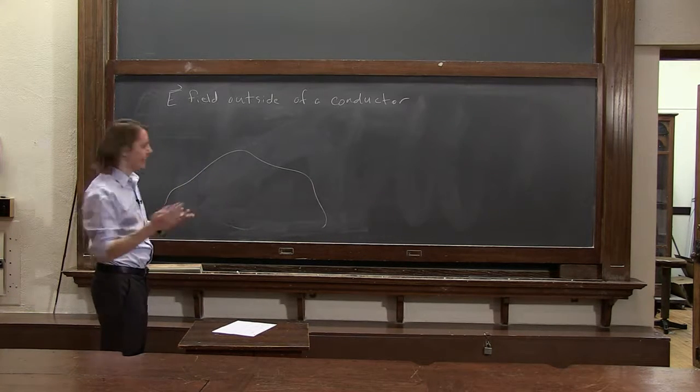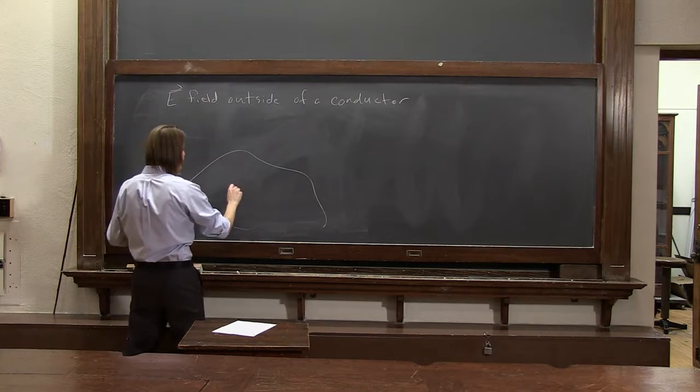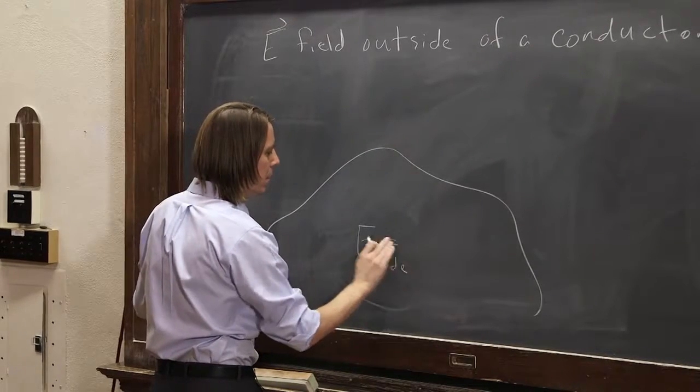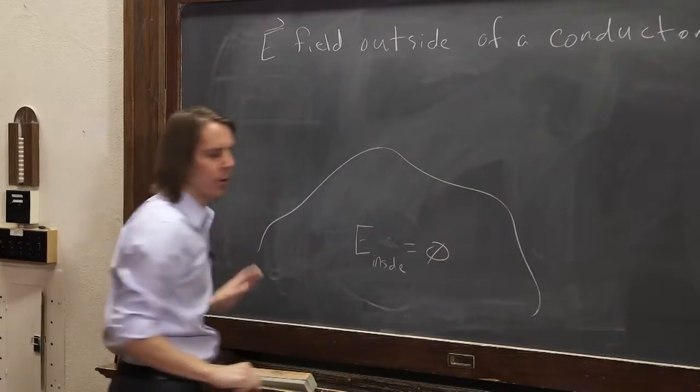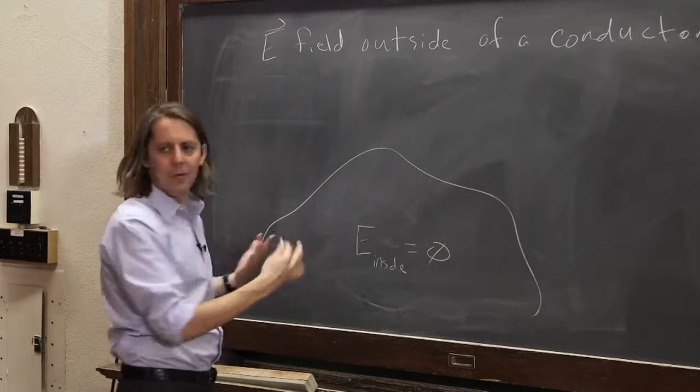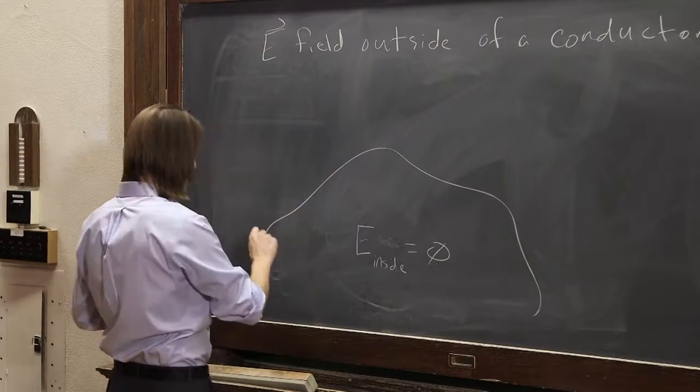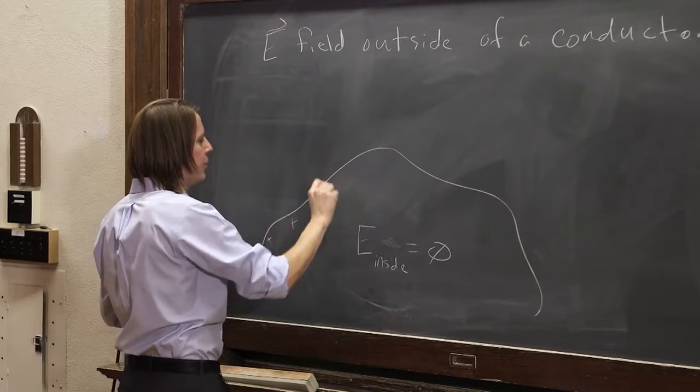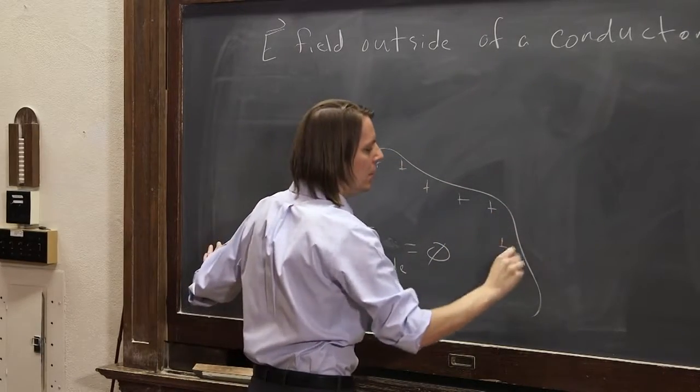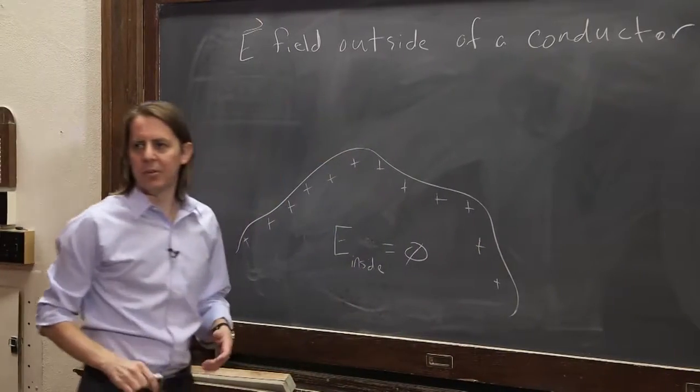And let's have it be charged. So say this conductor has some charge on it. We know that the charge will move until the E field inside is zero. That's what we covered before. Because it'll move to make the field zero, because if the field weren't zero, it would keep going. So the charges will move until the field is zero. So they'll collect somehow on the surface.